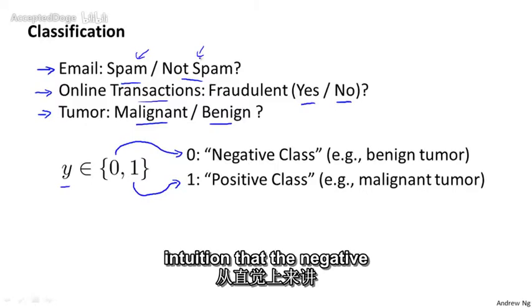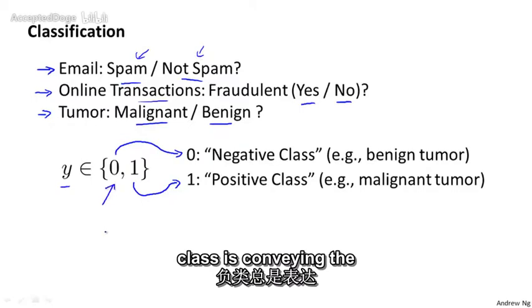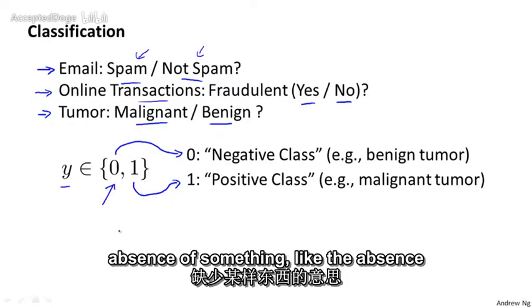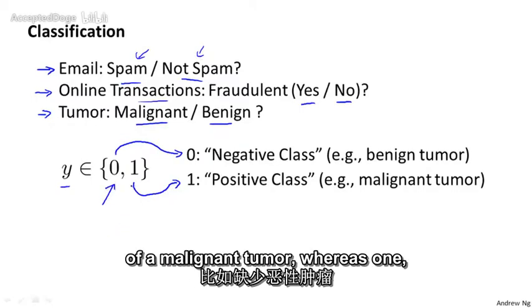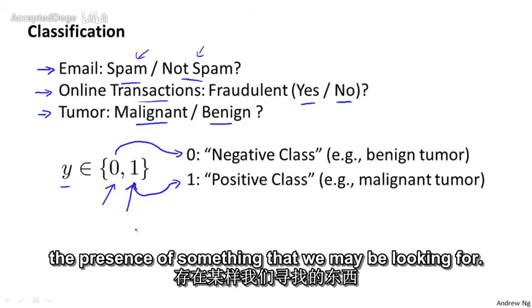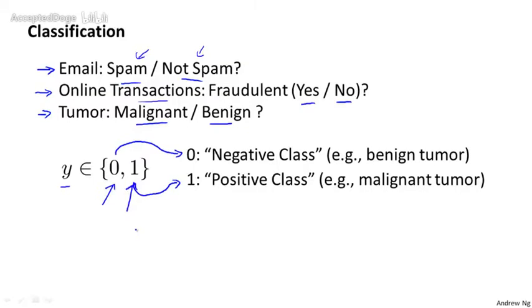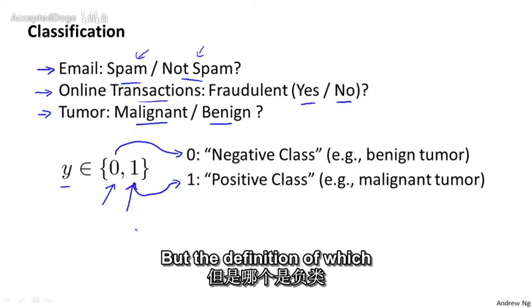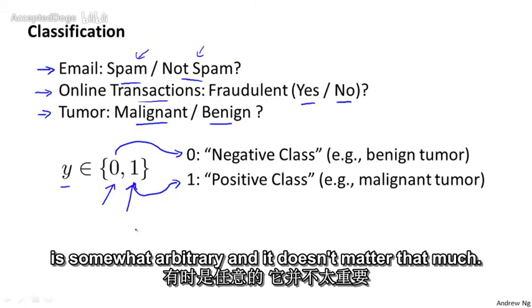But often there is this intuition that the negative class is conveying the absence of something, like the absence of a malignant tumor, whereas 1, the positive class is conveying the presence of something that we may be looking for. But the designation of which is negative and which is positive is somewhat arbitrary and it doesn't matter that much.